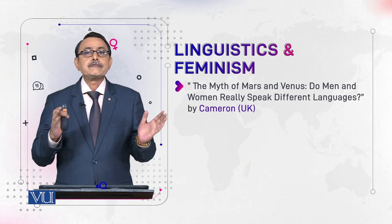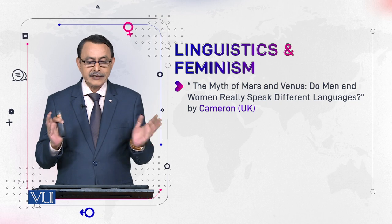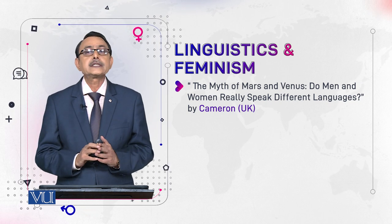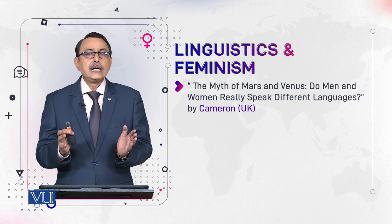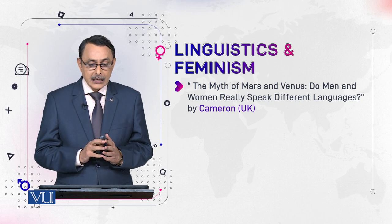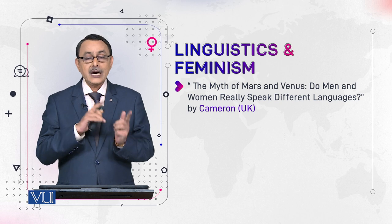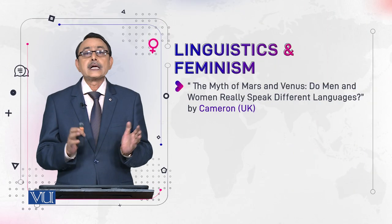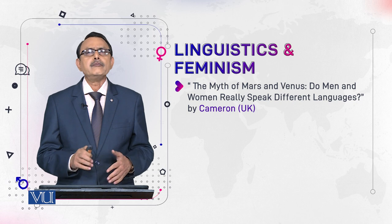One of the works of pioneers of this field is The Myth of Mars and Venus: Do Men and Women Really Speak Different Languages? This book was written by Professor Deborah Cameron. She uses Mars and Venus metaphorically, arguing that when people say men and women speak two different languages, they are actually talking about a myth. This was her great contribution, and she has written many other books on this topic.